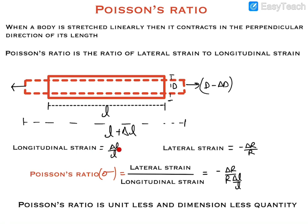Longitudinal strain is ΔL/L, while lateral strain is −ΔR/R. The negative sign represents the fact that the radius or diameter is decreasing as we increase the length. The ratio of lateral strain to longitudinal strain is called Poisson's ratio.